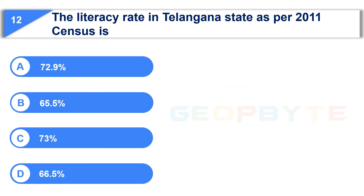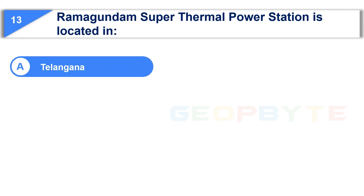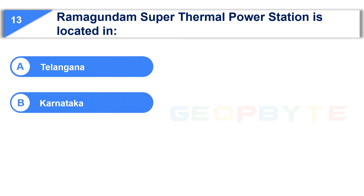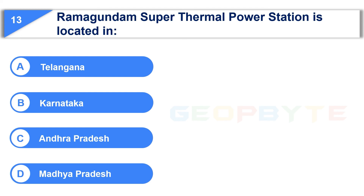Your time is up and the correct answer is Option D: 66.5%. The 13th question is: Ramagundam super thermal power station is located in — Option A: Telangana, Option B: Karnataka, Option C: Andhra Pradesh, Option D: Madhya Pradesh. Your time starts now.